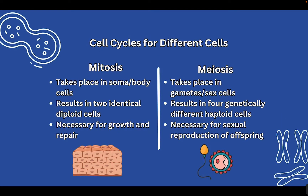The cell cycle is a process that cells go through when they're going to divide. There are two different types of processes within the cell cycle. Both start with interphase, and then we go into the M phase. For a body cell, we go through mitosis, which results in two identical diploid cells. We use mitosis for growth and repair — to make body cells as we grow up, and for any injuries we have to replace skin or blood that may be lost.